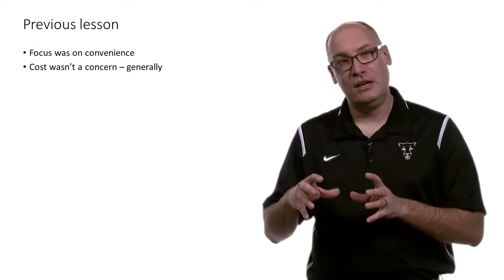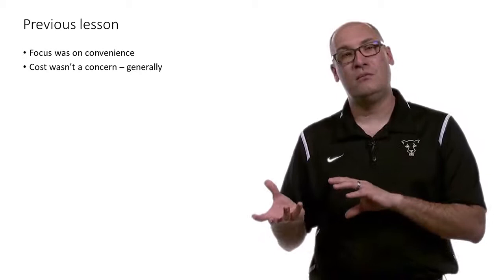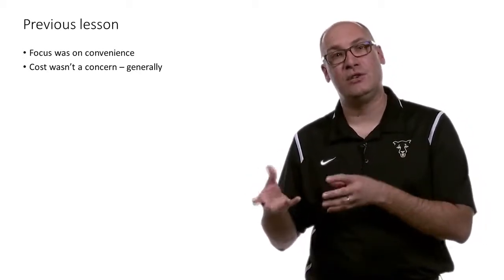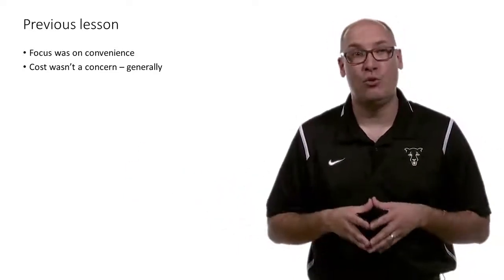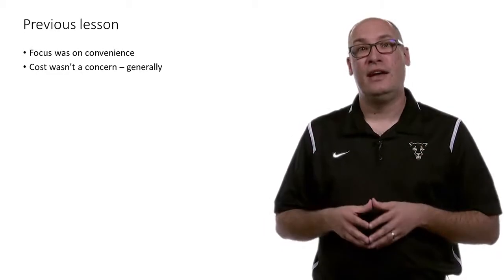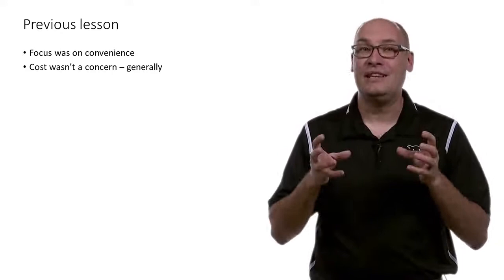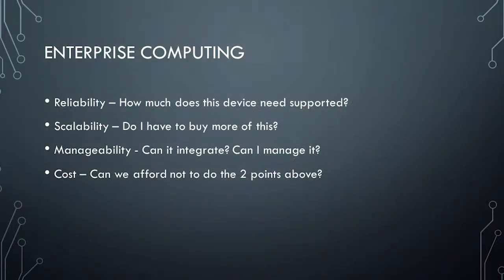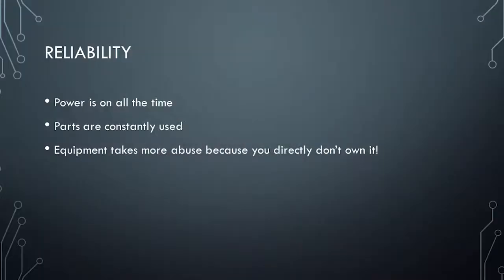Cost is a concern, but it's not as big a concern as with personal computers. You probably can't spend thousands of dollars to automate your home, but enterprises need this technology. So let's dive into four key areas: reliability, scalability, manageability, and cost.